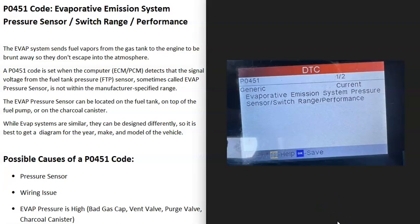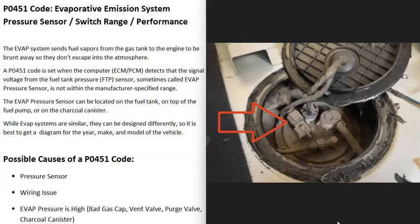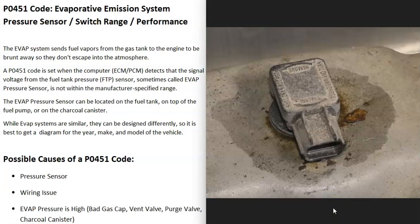The first possible cause of a P0451 code is that the pressure sensor has just gone bad and needs to be replaced. You can test these sensors — there are good YouTube videos on how to do that. They can be located differently: sometimes right on top of the fuel pump, sometimes on the charcoal canister, and other times on top of the gas tank. You'll need to get an evap system diagram for your particular vehicle to know where the pressure sensor is located.